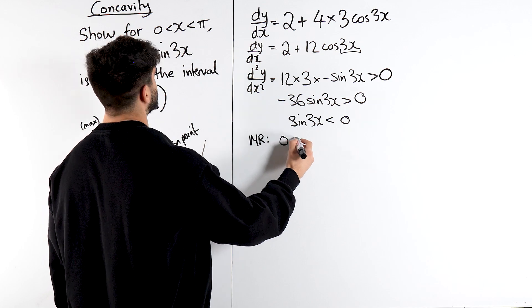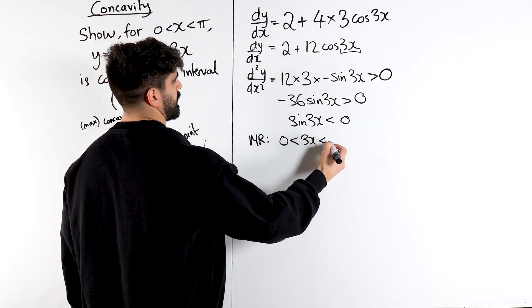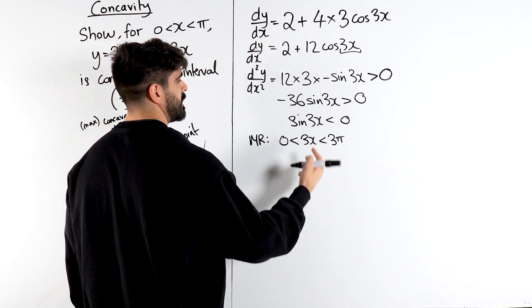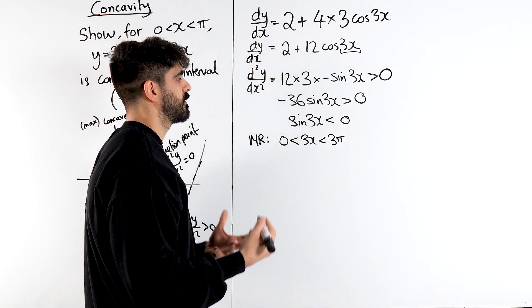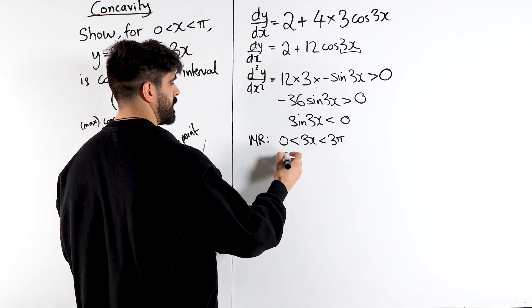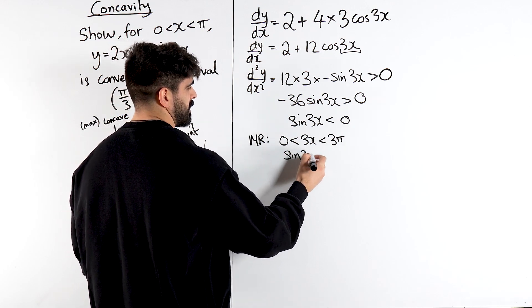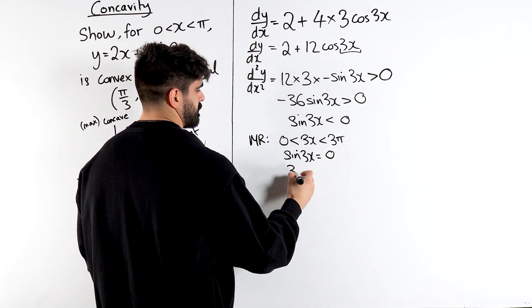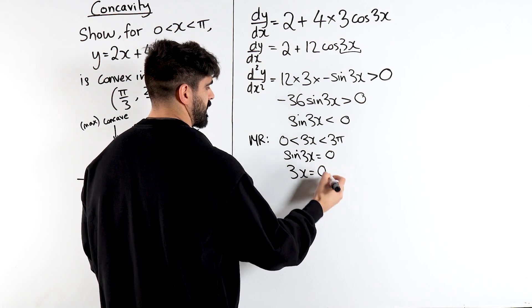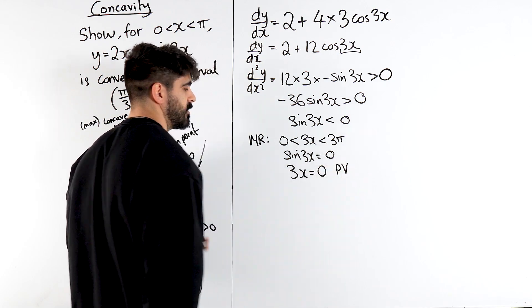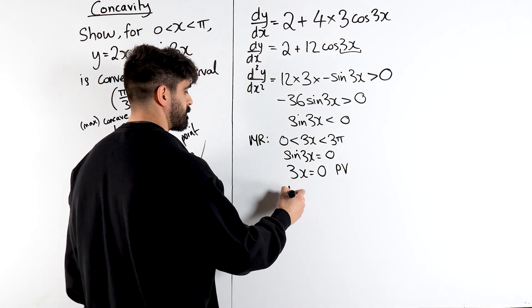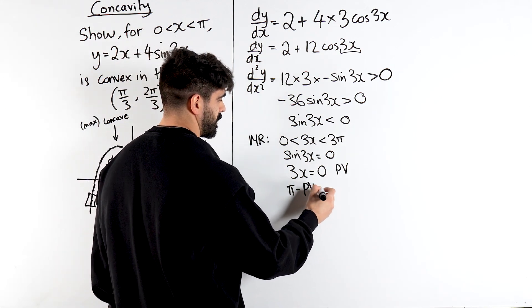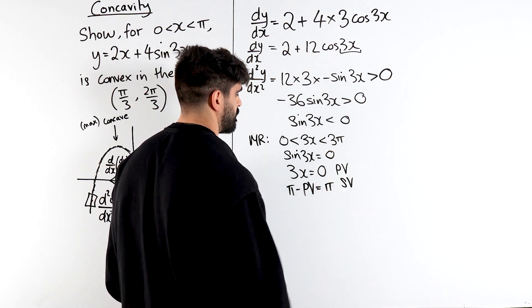We're going to get 0 < 3x < 3π. Now I'm going to solve sin(3x) = 0 first and then we're going to draw the graph and figure out the region that we're interested in. So for sin(3x) = 0. When you do inverse sin of 0 you just get 0. That's your primary value. Do you guys remember how to work out secondary value? We don't use the cast diagram. It's π minus the primary, which is π. Which gives you my secondary value.